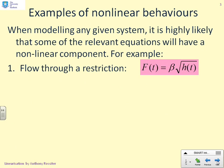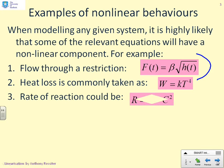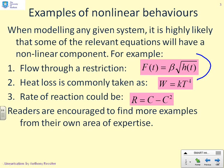What about flow through restriction? We tend to in this module use the approximation that flow is proportional to depth, but in reality a much more accurate representation is where the flow is proportional to the square root of the depth. What about heat loss? Heat loss is commonly taken to depend on the fourth power of the temperature, or rate of reaction could be any nonlinear equation. I would encourage you to find some other examples of nonlinearity — the key thing is to recognize nonlinear behaviors exist and what we want to do next is ask how do we deal with them.